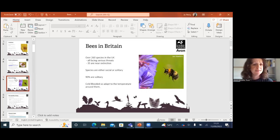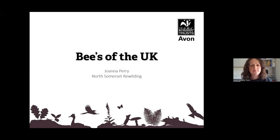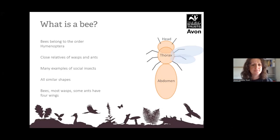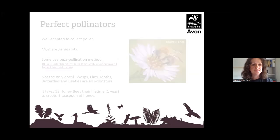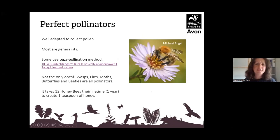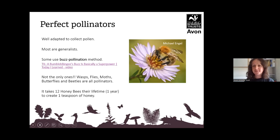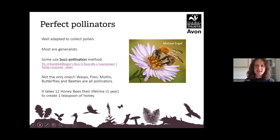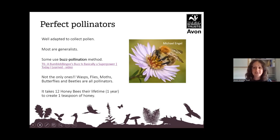That's a really good video. Groups of bees, flies and even beetles are pollinators — some are accidental because they've got hairy legs. A little fact: it takes 12 honeybees their entire lifetime — one year — to produce one teaspoon of honey. When you see all that honey on the shelves, you can think how many bees it took to produce it all. It's pretty amazing.